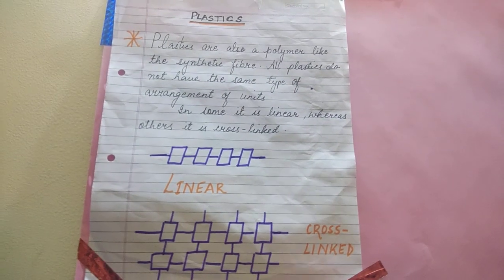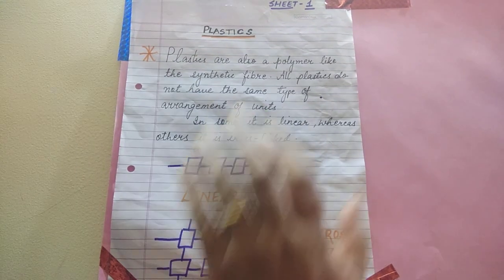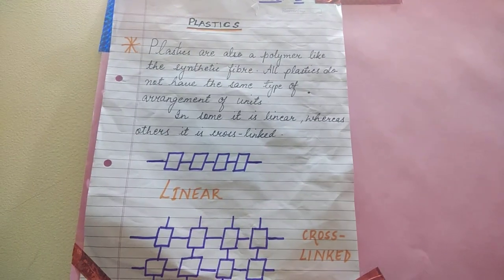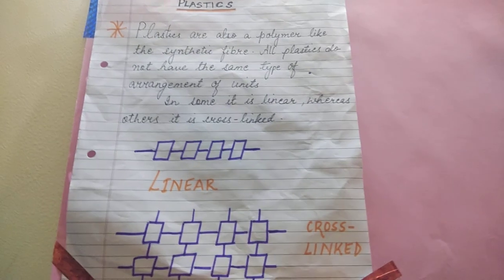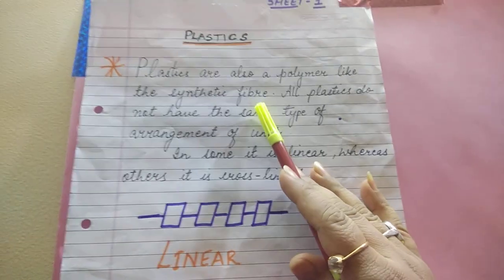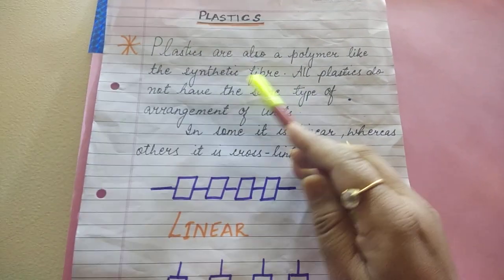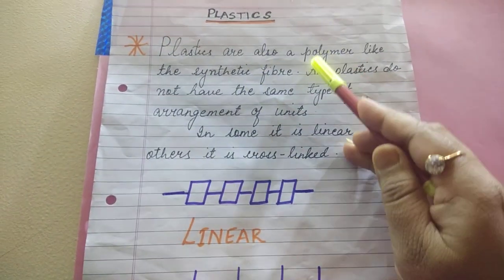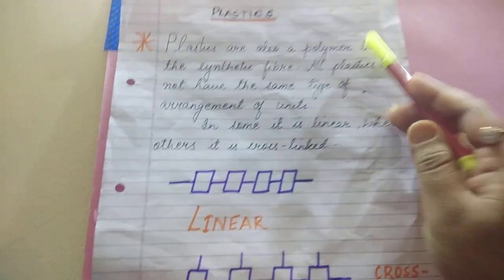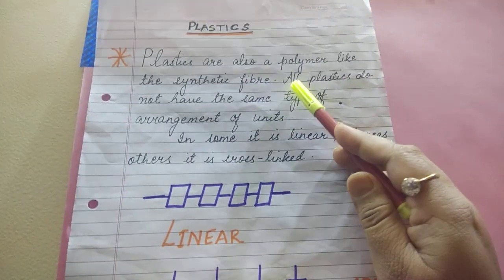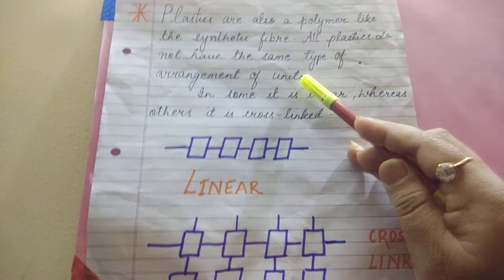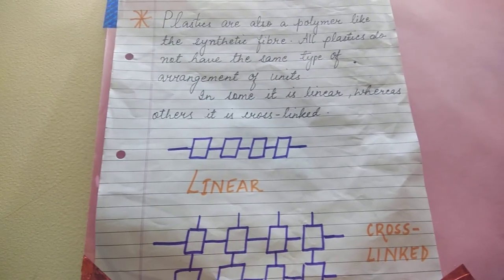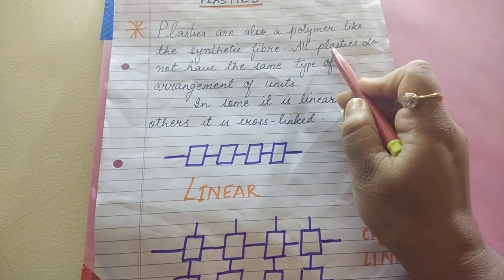Good morning children. Our next topic is the last portion of the chapter — plastics. Plastics are also a polymer, just like synthetic fiber, which is made up of certain polymers. An important point: all plastics do not have the same type of arrangement of units.